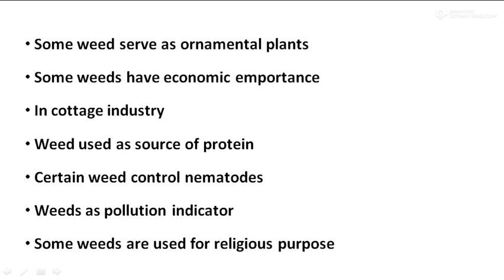Some weeds have economic importance. Kans (Saccharum spontaneum) is used for thatching purposes. Tubers of Lavala are used for preparation of agarbattis (scented sticks for burning) and aromatic preparations. Certain weeds are used for aromatic oils — lemongrass, Maca, and Brahmi. In cottage industry, some weeds are useful for preparation of mats and ropes. Saccharum munja is widely used in cottage industries for preparing baskets, furniture, and curtains, and is also used by poor people for preparing huts.